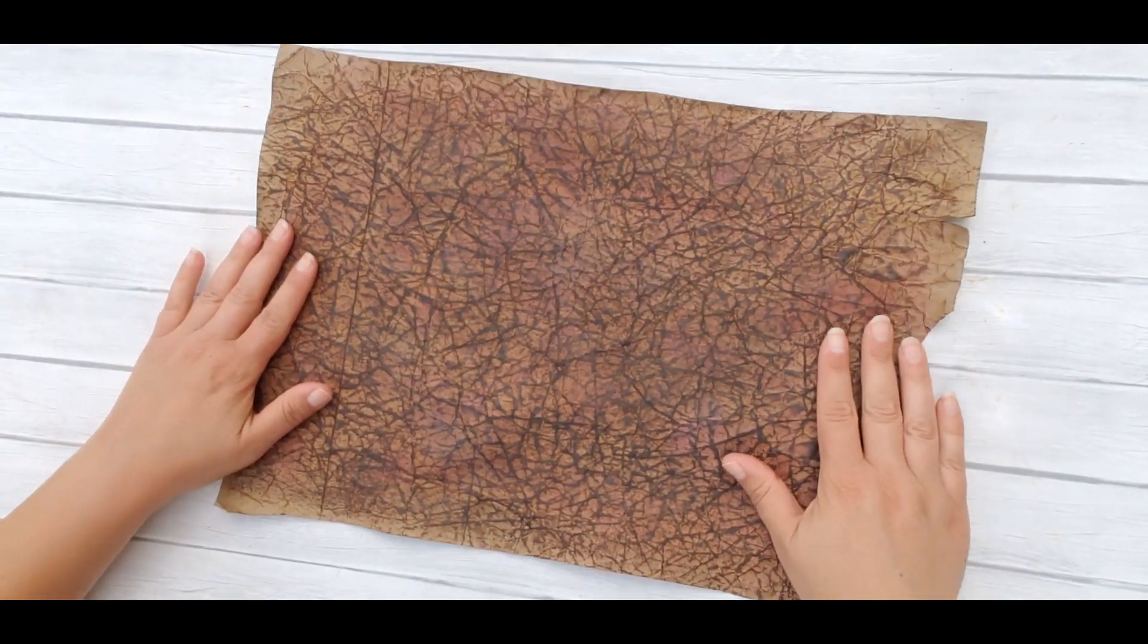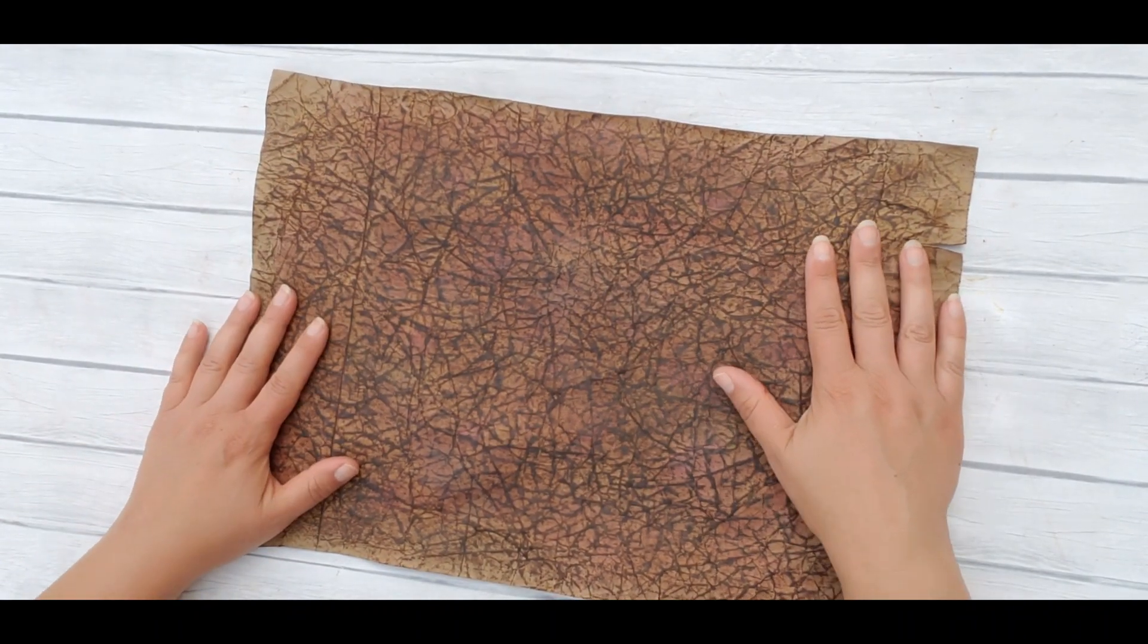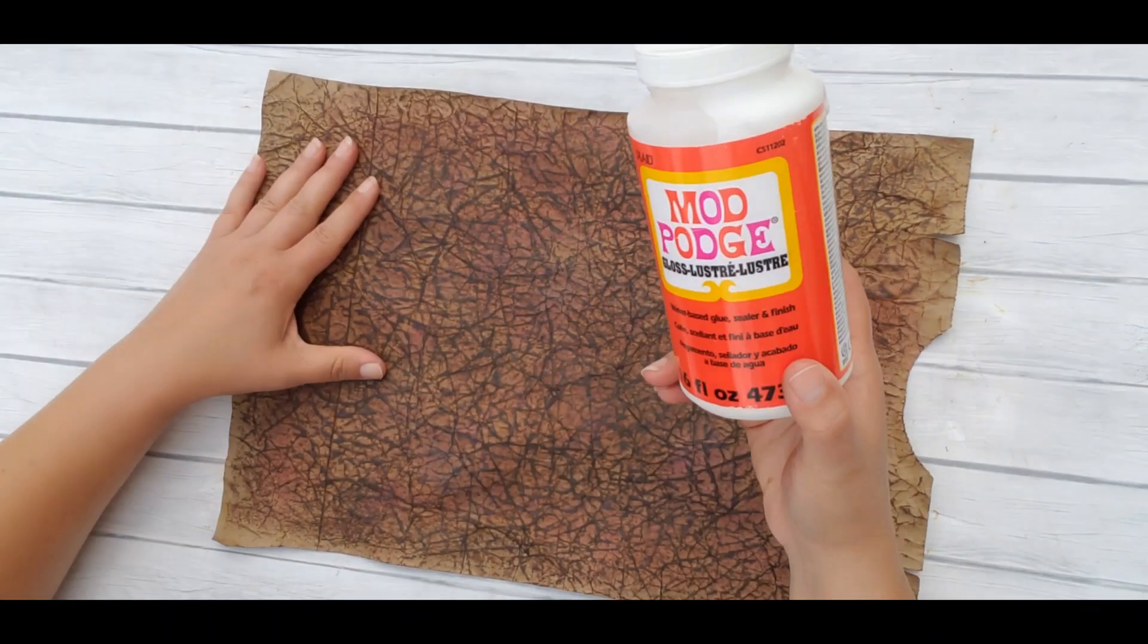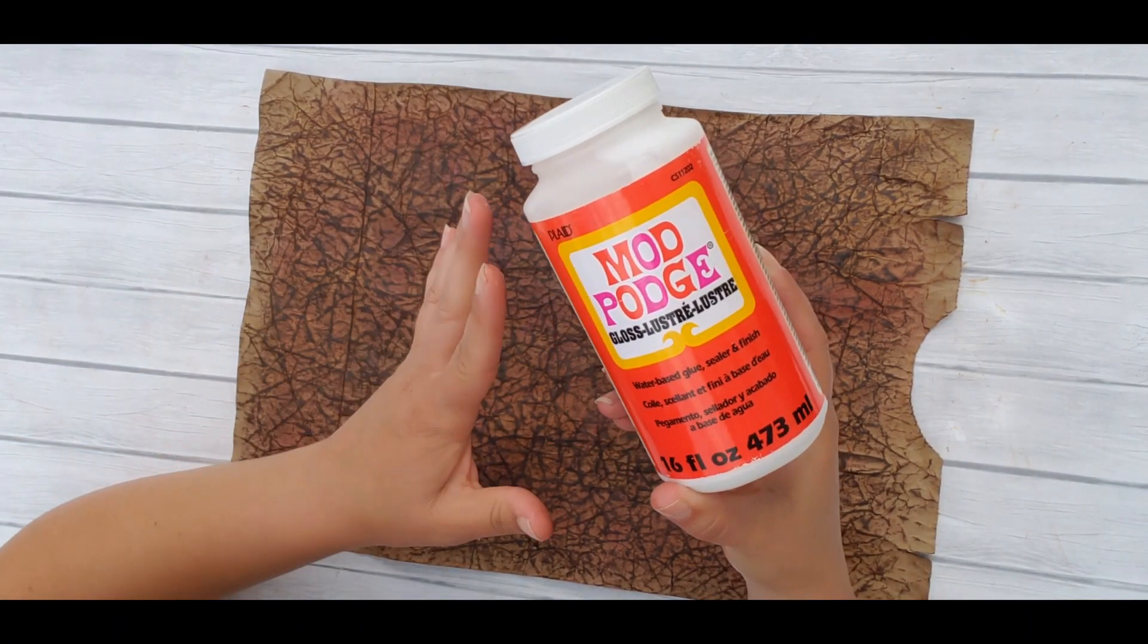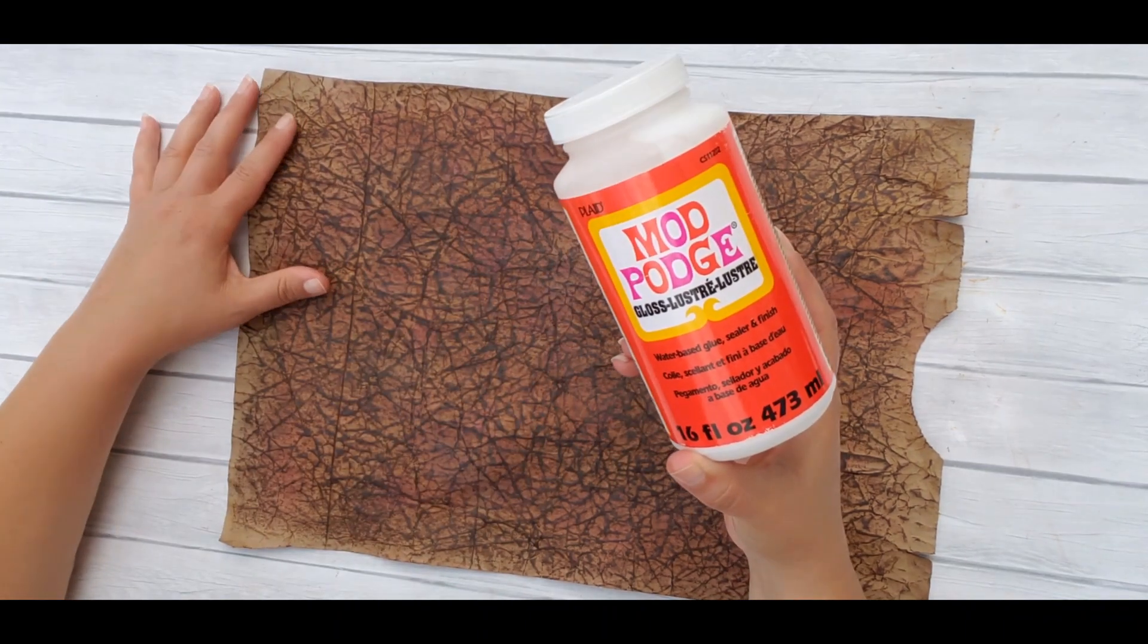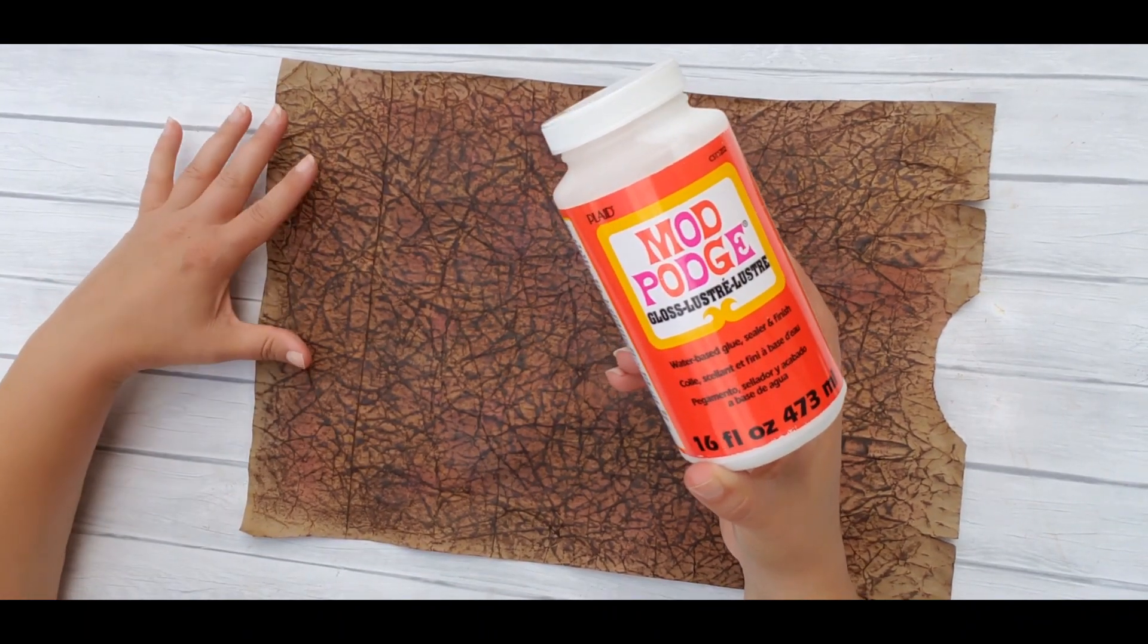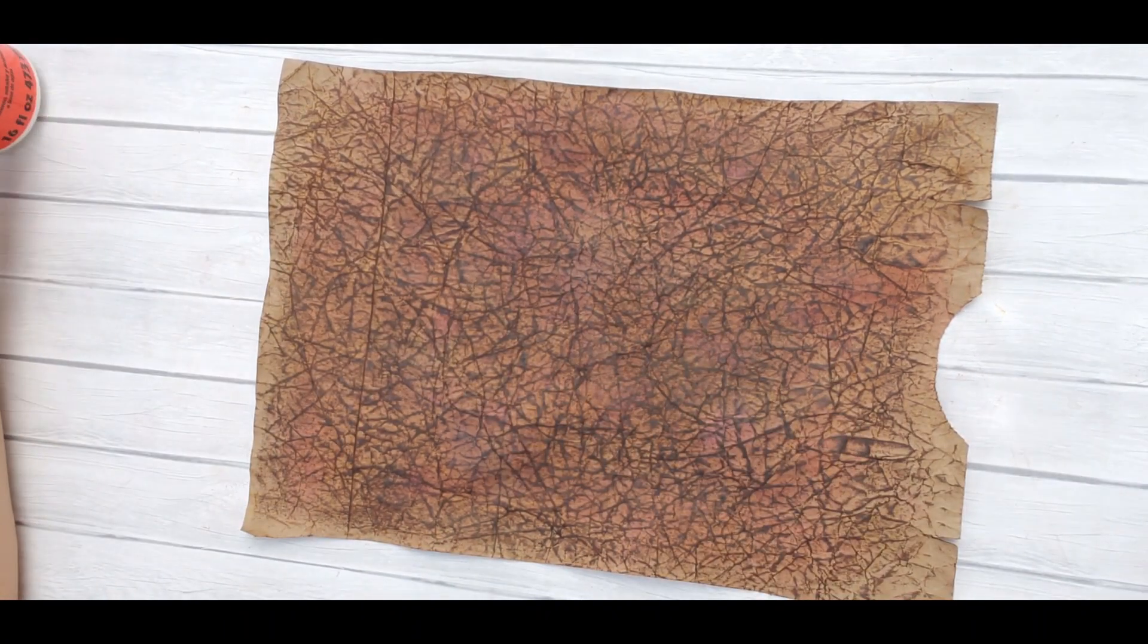And now that our paper is completely dry, I'm going to cover it with a layer of mod podge. I'm using the gloss finish. This is completely up to you. But I like the gloss finish because I feel it gives it a nice shiny finish and it looks just like real leather. So let's do it.